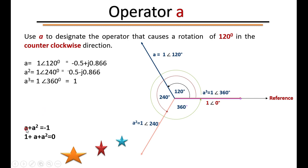From the properties of 'a': if you add a + a², performing vector addition of these two phasors using their rectangular forms (j0.866 and −j0.866), the imaginary parts cancel and you get −1. Therefore a + a² = −1. Adding 1 to both sides gives 1 + a + a² = 0, which is an important identity.